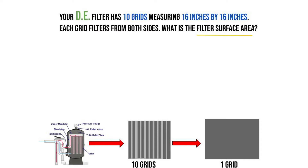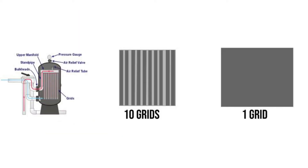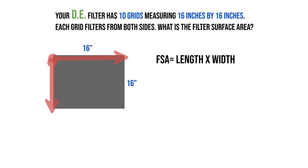Because this is square, we would be using our length times width formula. Let's go ahead and draw a picture here. We're going to have a DE filter tank that you can physically look down into, and we're going to have 10 grids. We're going to take one of these grids out and draw it, and the problem says it's 16 inches by 16 inches.